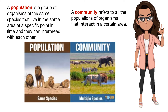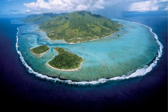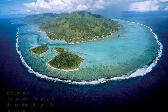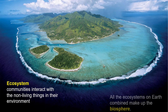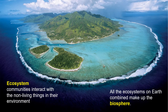In ecology, a community refers to all the populations of organisms that interact in a certain area. Community ecology is the study of how they interact — for example, what feeding relationships occur in the area, what types of grasses do specific herbivores eat, and what eats the herbivores. The different populations interact with each other to form a community. When we look at how the communities interact with the non-living things in their environment, then we are looking at ecology at the ecosystem level.